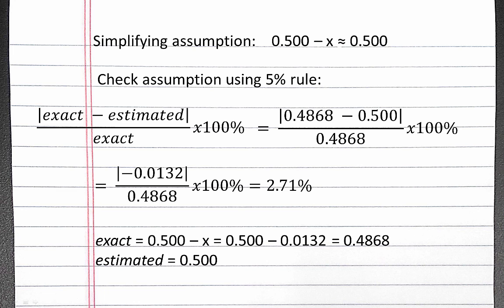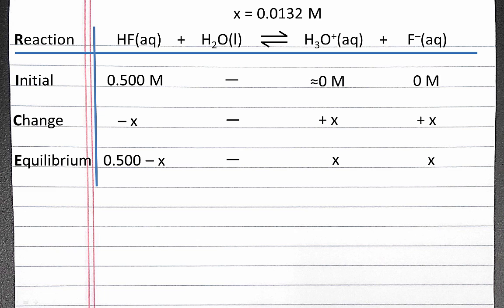Since this is less than 5%, our assumption is valid, and our value of x should be close enough to what we would have calculated if we used the quadratic formula. So now we can plug our value of x into our equilibrium row to solve for our equilibrium concentrations.